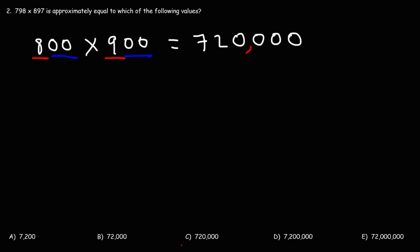And, so, this is going to be 720,000. So, therefore, answer choice C is the correct answer. As you can see, it's not that bad. It's not that difficult. Once you round, you just multiply, carry over the zeros, and then you get your answer.